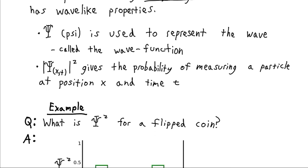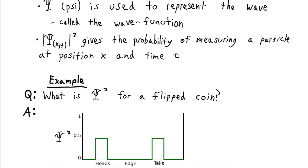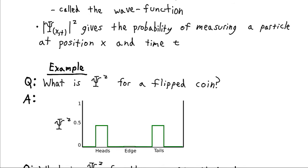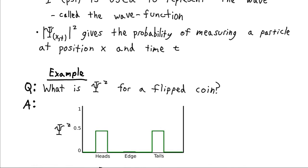Now to kind of wrap your head around this, let's consider a classical example. You know, let's say we wanted to write down this psi-squared function, this probability function for a flipped coin. Well basically we're going to map this on a scale of 0 to 100%, but we'll just go ahead and do it as a fraction from 0 to 1.